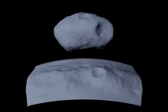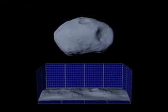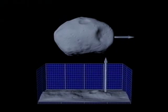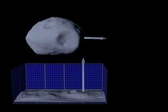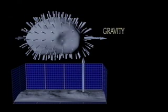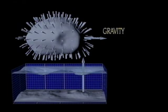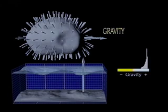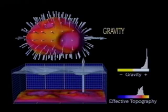Phobos is unwrapped so that the entire surface can be seen at once. The same side of Phobos always faces Mars, the direction of which is indicated by the arrow. Gravitational forces are represented as needles around the surface of Phobos. The magnitude of the force is represented as a height field and summarized as a histogram. A quantity called effective topography shows which way an object would roll on the surface. With this color map, objects would roll from yellow to red to blue areas.